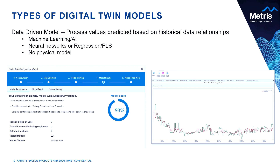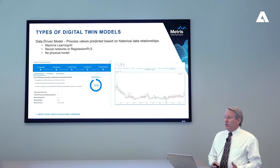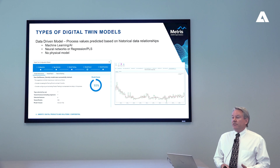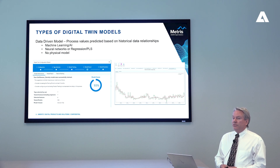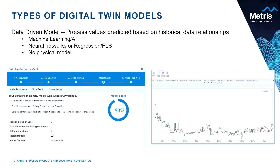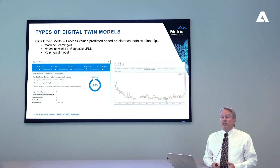A second type of digital model is based on historical data. In this case, we take an operating plant's data, look at all historical relationships, and generate predictions of variables based on actual values of other variables. We have a wizard for this in our Metris tool that allows us to build a virtual sensor simply and automatically using machine learning techniques. In this example, the system examined seven different variables and tried over 300 different model structures before choosing an optimal one, showing the quality of fit and a plot of predicted versus actual value. These models are quick and easy to develop, used to produce predictions for single variables.